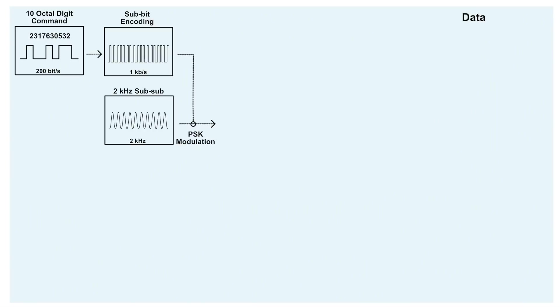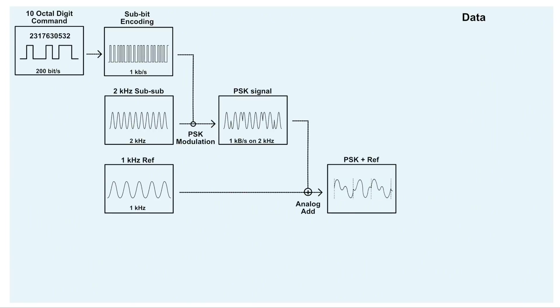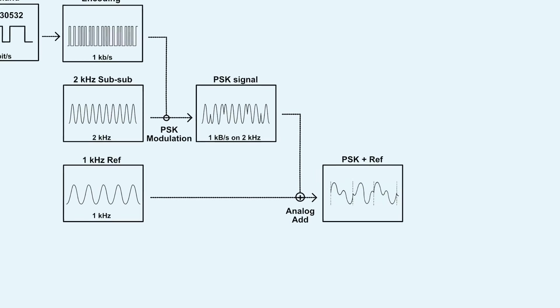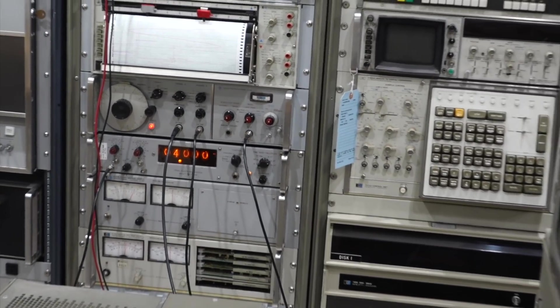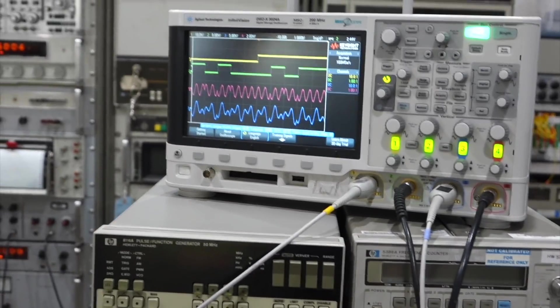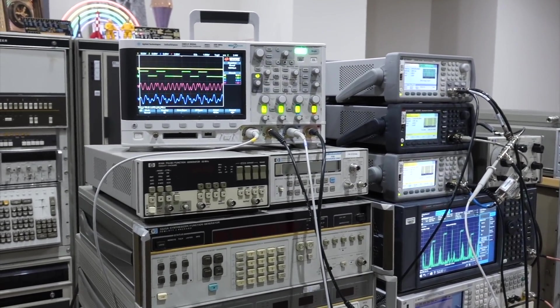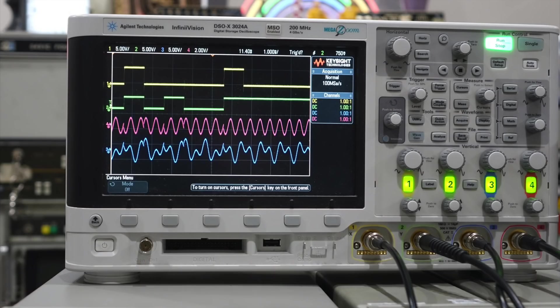Then we had to reproduce the complicated analog encoding scheme to generate the weird phase shift keyed signals according to the original NASA spec. This was done with the friendly help of some good looking HP equipment from the 1960s, and also some modern Keysight. We were able to generate the correct signals.